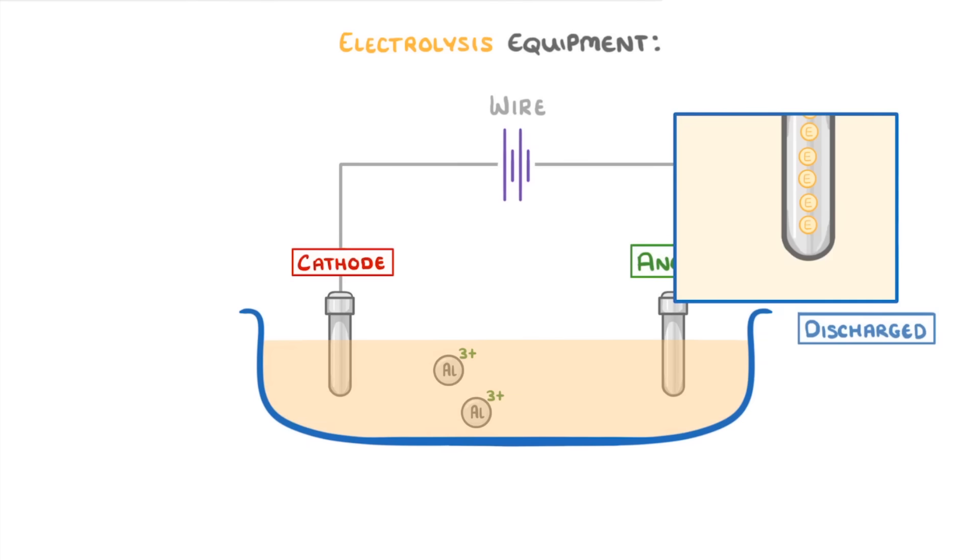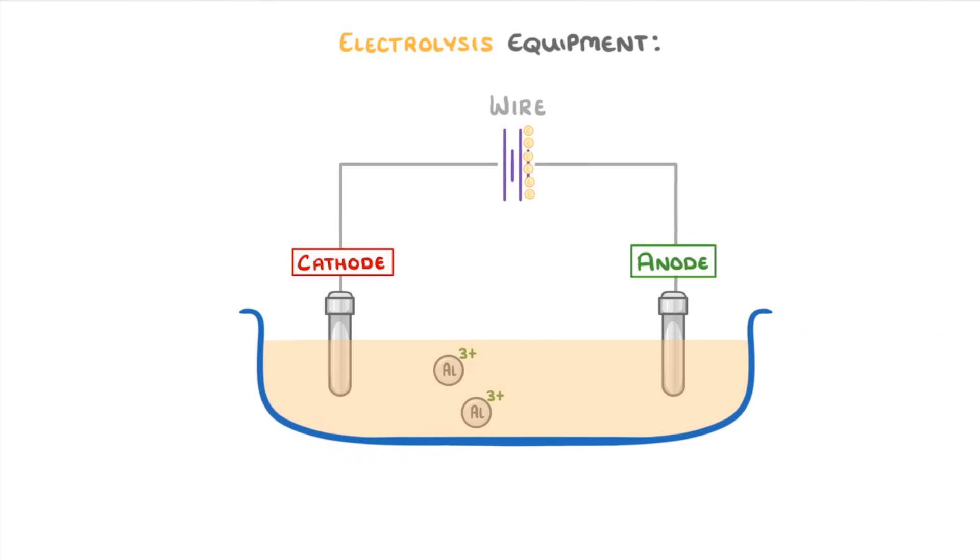The electrons though, will be passed through the wire to the negative cathode on the left. As it's negative, it will attract the positive ions in the electrolyte, and can donate electrons to them.